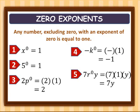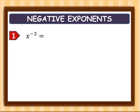Now let's proceed to negative exponents. To make a negative exponent positive, we simply get the reciprocal. For example one: x raised to negative three is found in the numerator. To make this positive, we bring it to the denominator and make the exponent positive. The numerical coefficient is one, so we have one over x cubed.